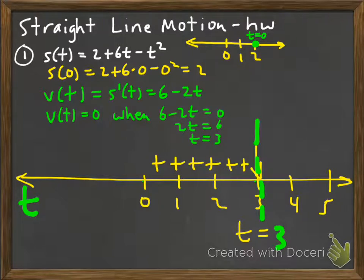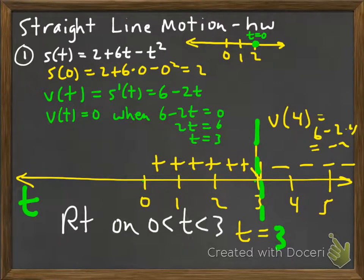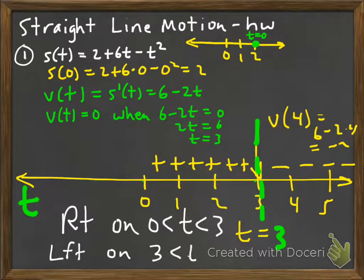Once we get past t=3, taking a test value like t=4: v(4) = 6 minus 2 times 4 = negative 2, so the velocity is negative on that interval. Since velocity is only 0 at t=3, the particle is moving to the right from t=0 to t=3, and moving left for t greater than 3.